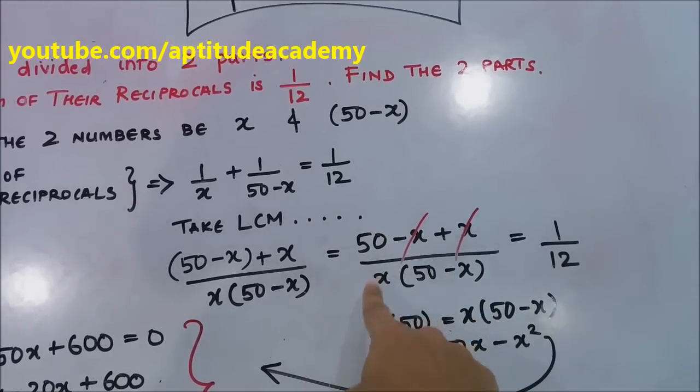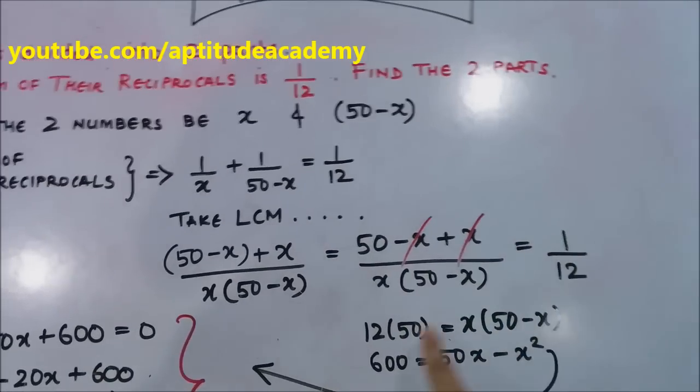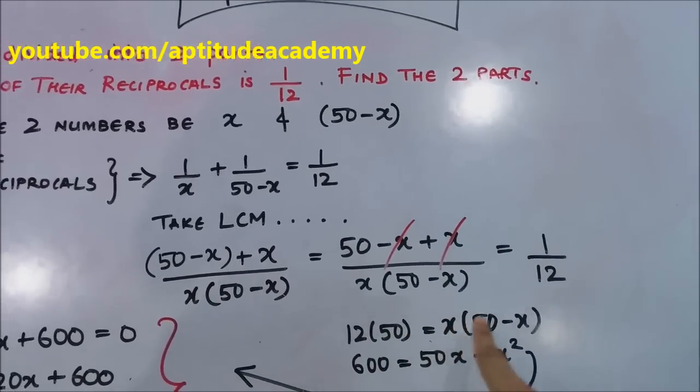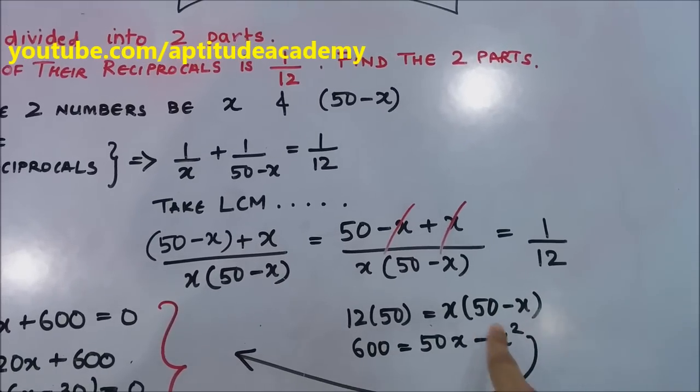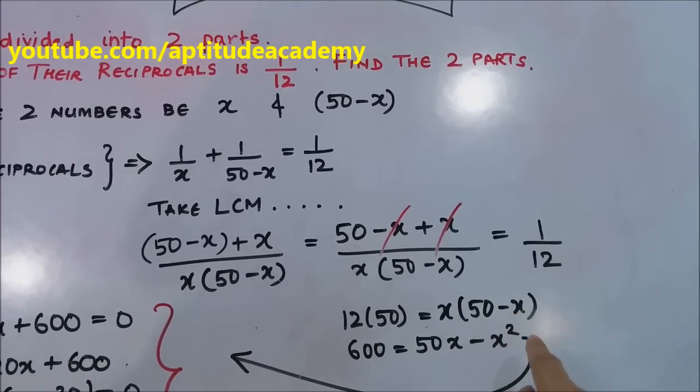If you take 12 here and multiply it by 50, and you take x times (50-x) times 1, you will get this: 12 times 50 equals x times (50-x). Multiply this here, you will get 50x - x².